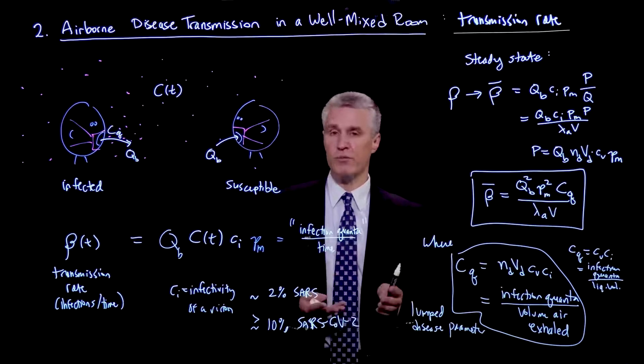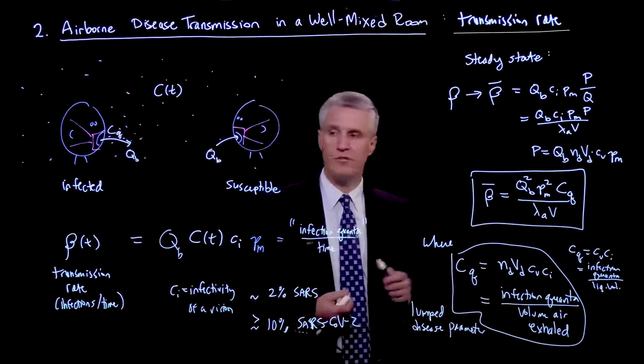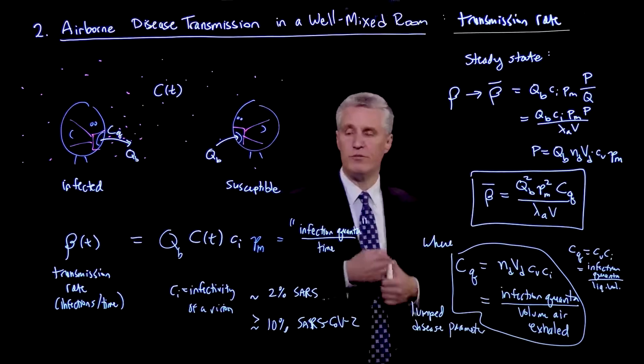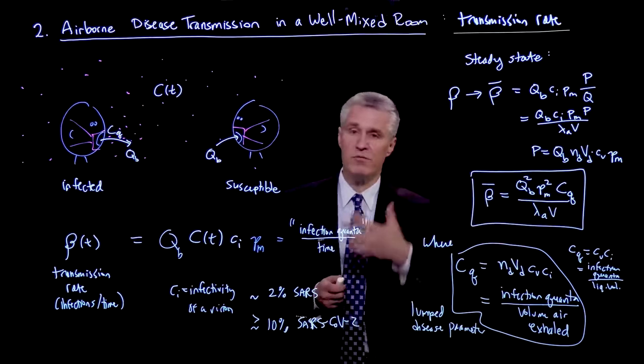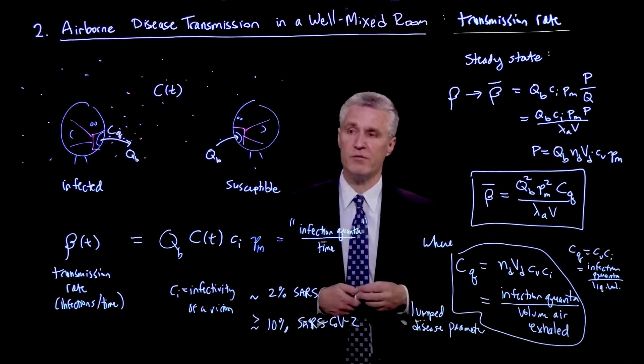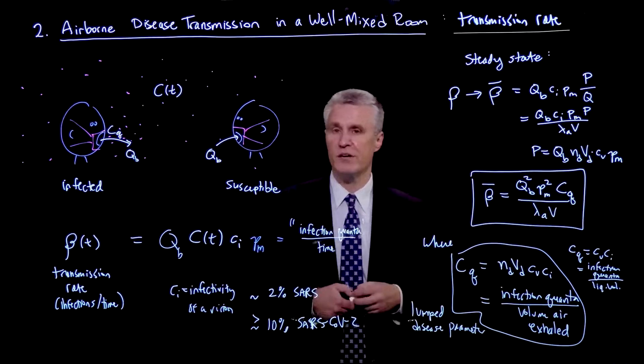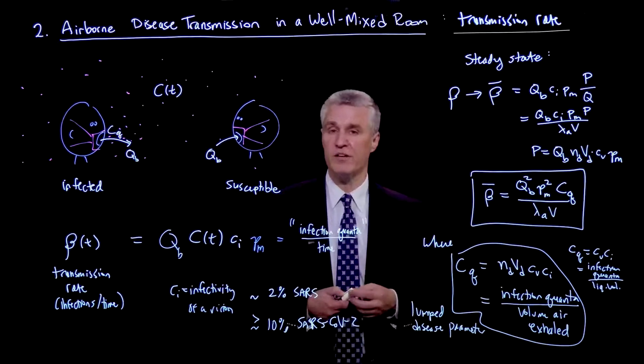And V, of course, is a geometrical parameter of the room, which is the volume. And so all the disease aspects are lumped into the CQ. So if I want to apply this to actual spreading of COVID-19, I have all these parameters that I know that come from the physics and fluid mechanics of the room. And then I have a single parameter CQ that I need to obtain from an understanding of disease transmission and looking at spreading events in indoor situations.